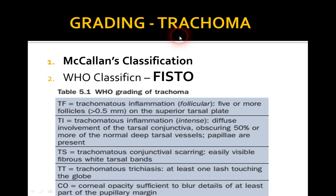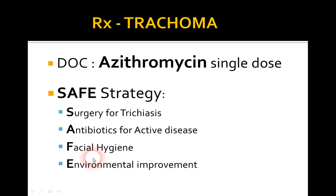You can observe the Arlt's scar over the upper palpebral conjunctiva, the black Herbert pits transformed from Herbert follicles, eyelashes turning inside rubbing the eyeball — trichiasis — and entropion changes. Grading of trachoma uses two classifications: McAllen's classification, and the more famous WHO FISTO classification: TF for follicular inflammation, TI for intense inflammation, TS for scarring of conjunctiva, TT for trichiasis, and TO for opacity of cornea. The drug of choice is azithromycin (single dose), followed by erythromycin and tetracyclines. The SAFE strategy: S for surgery for trichiasis, A for antibiotics for active disease, F for facial hygiene, E for environmental improvement.